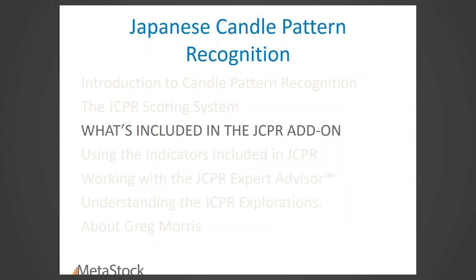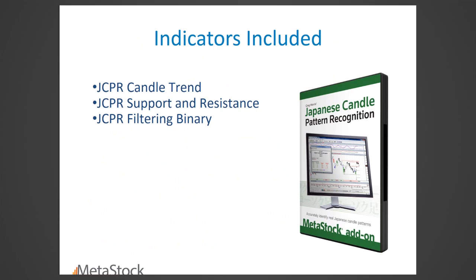What's included in the add-on: there's Candle Trend, a trend-following method I created that's volatility-based, or you could call it adaptive trend. When I did the research for the book I used a 10-period exponential average for short-term trend. I then created Candle Trend, which is built into JCPR. The MetaStock team agreed you can use it with anything else — if you have JCPR installed, the trend indicator is in your indicator file and you can use it even if you're not actively using JCPR. The support and resistance and filtering binary are also available independently.